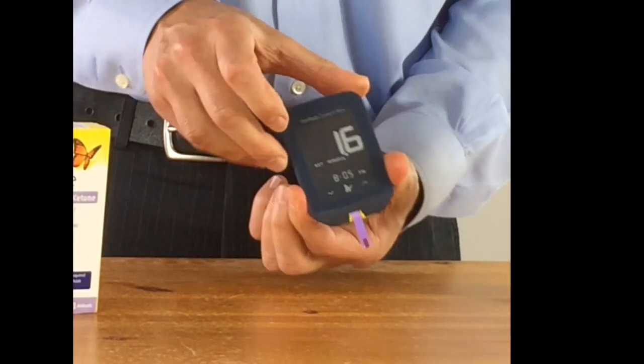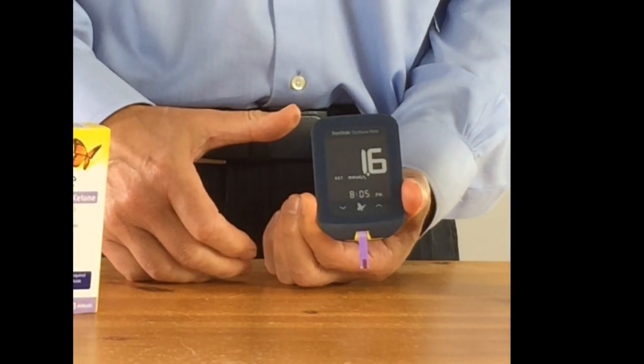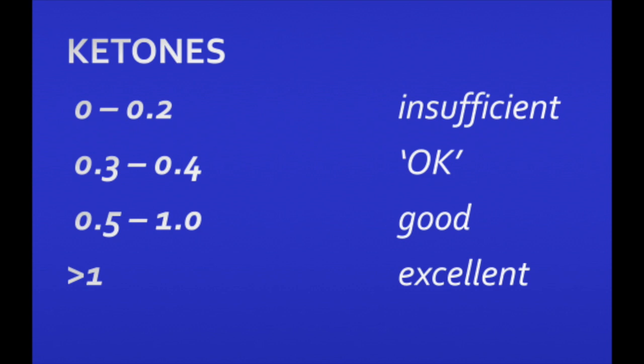You can then look at your reading. Now for me, my reading is 1.6 today, but really there isn't a better or worse reading. If you're looking for weight loss, you need to be above 0.3, but there are certain medical conditions where you might want to have readings of four or six. You need to tailor it according to what you need to do.